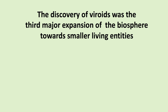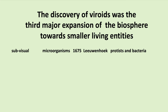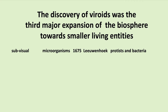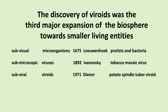The discovery of viroids was the third major expansion of the biosphere towards smaller living entities. The sub-visual world was discovered by Leeuwenhoek with his microscope around 1675. Then sub-microscopic viruses — which you can't see with an ordinary microscope — were discovered in 1892 by Ivanovski, first in the tobacco mosaic virus. Then the sub-viral level: viroids were discovered in 1971 by Diener in the potato spindle tuber viroid.